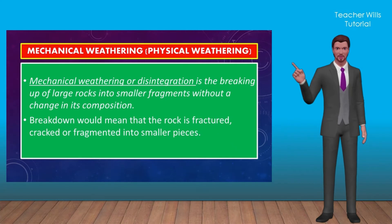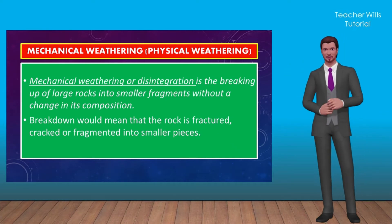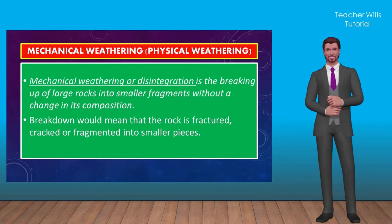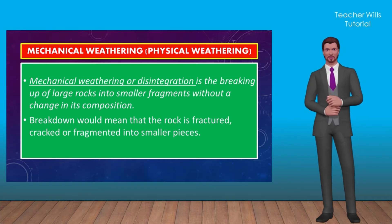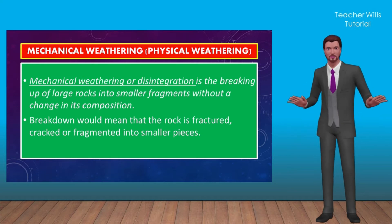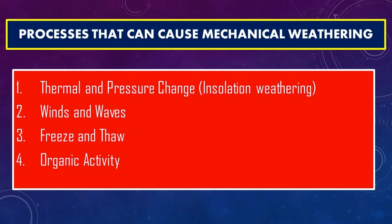Mechanical weathering or disintegration is the breaking up of large rocks into smaller fragments without a change in composition. The rock is fractured, cracked, or fragmented into smaller pieces. The processes that cause mechanical weathering include: one, thermal and pressure change, also known as insolation weathering; two, winds and waves; three, freeze and thaw; and four, organic activity.